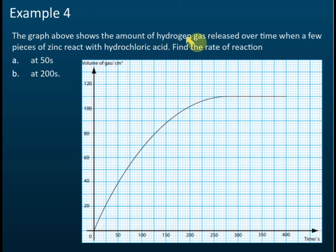The graph above shows the amount of hydrogen gas released over time when a few pieces of zinc react with hydrochloric acid. Find the rate of reaction at 50 seconds. Just find A, don't need to find B.